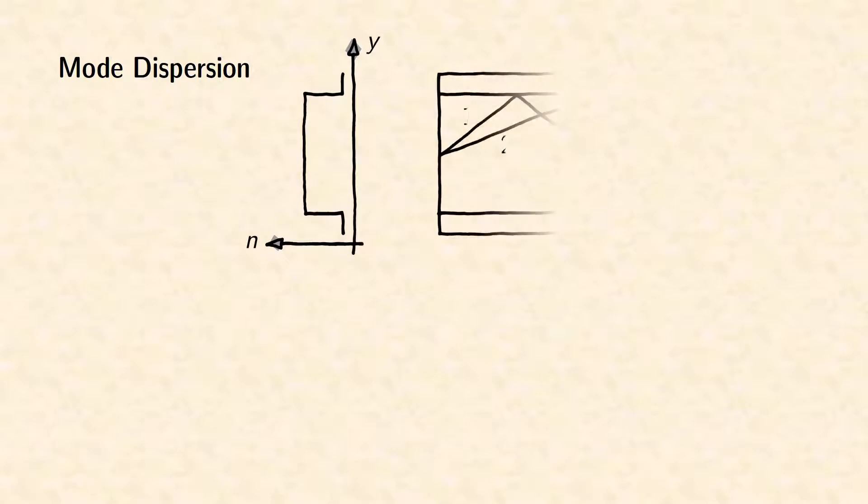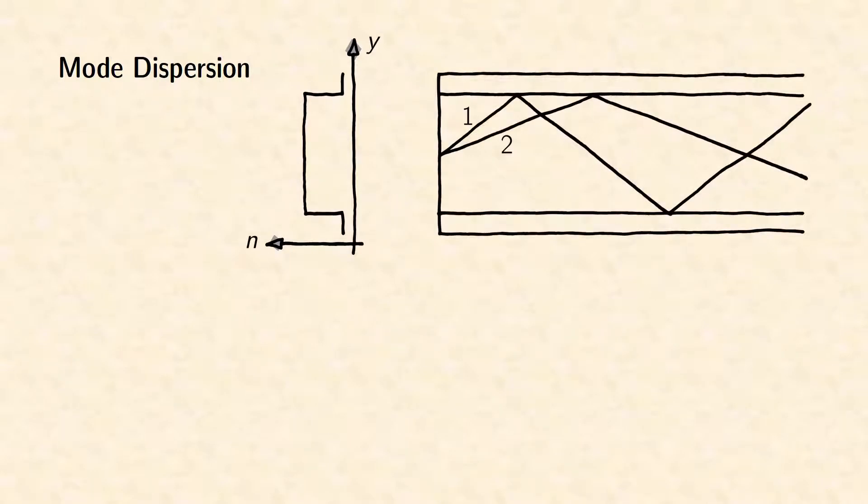Imagine two modes 1 and 2 of a multimode step-index fiber with different mode angles. At the input fiber end, the signal is in phase on both paths. But obviously, the path of mode 2 is longer than that of mode 1.